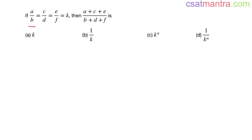If a/b = c/d = e/f = k, then (a+c+e)/(b+d+f) is also equal to k. In other words, if a is to b equals c is to d equals e is to f equals k, then a+c+e is to b+d+f is also equal to k.